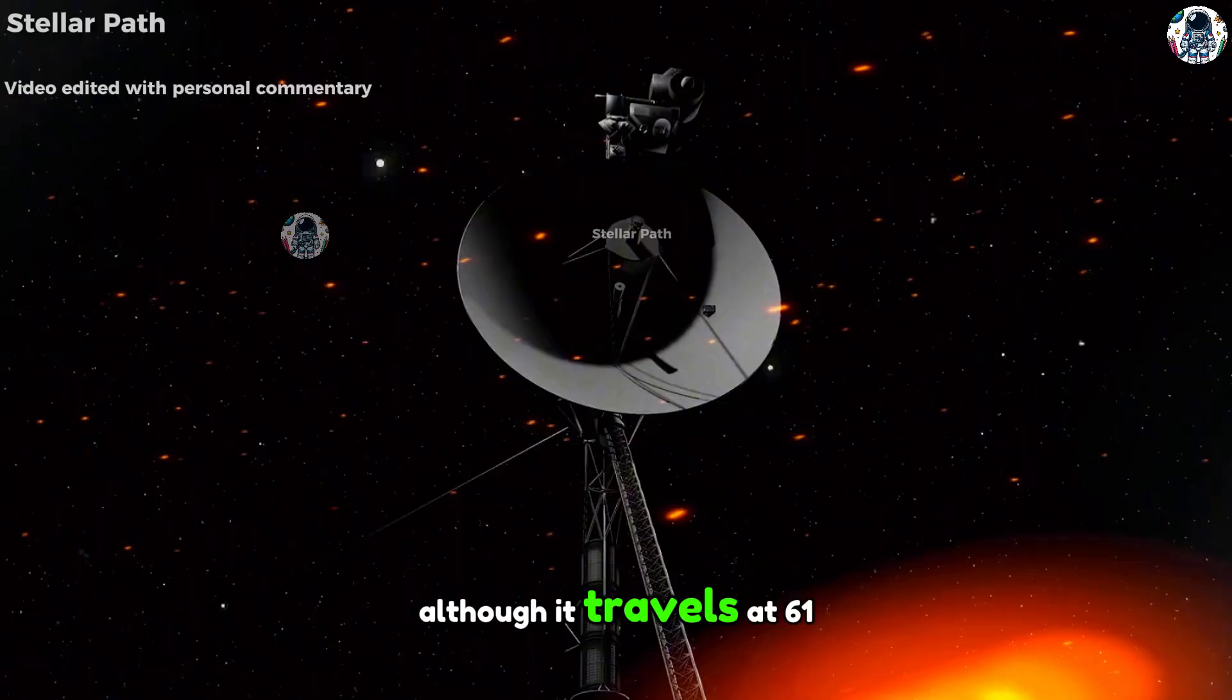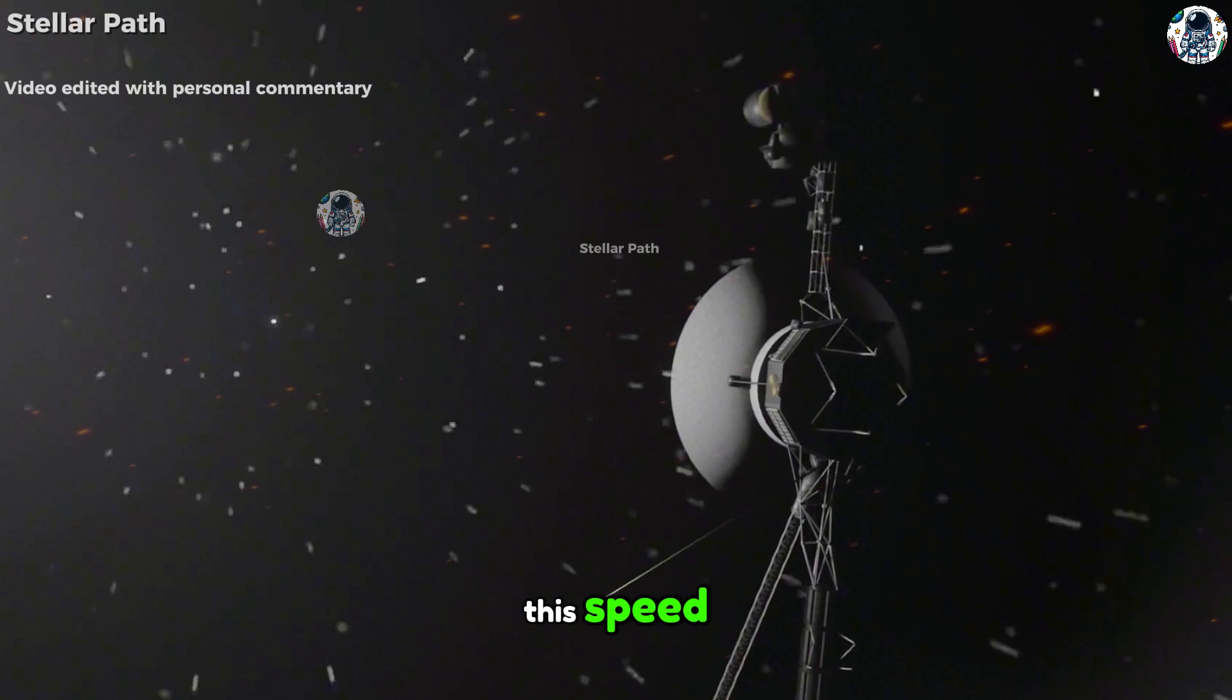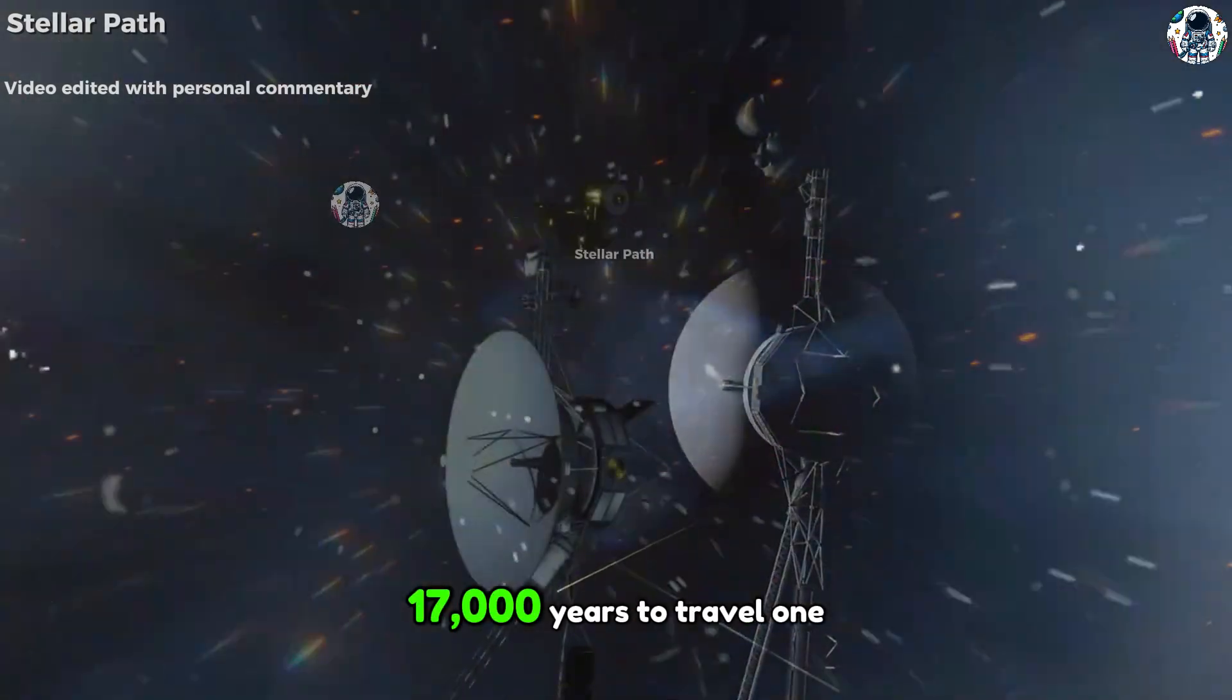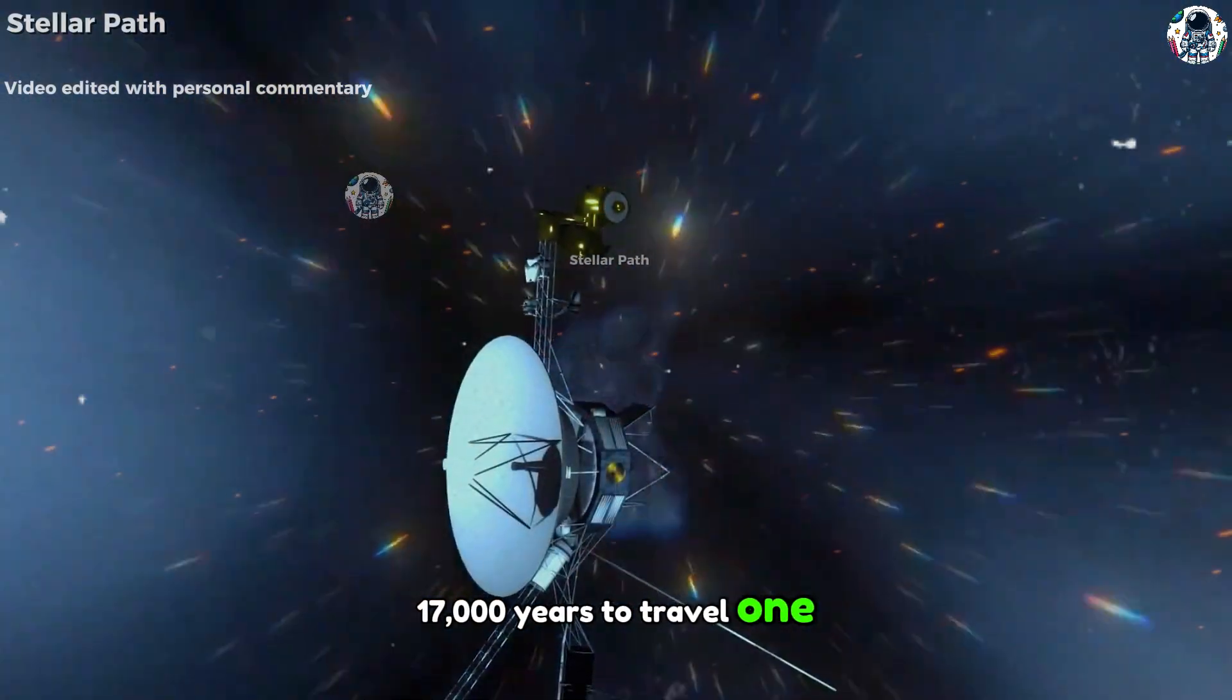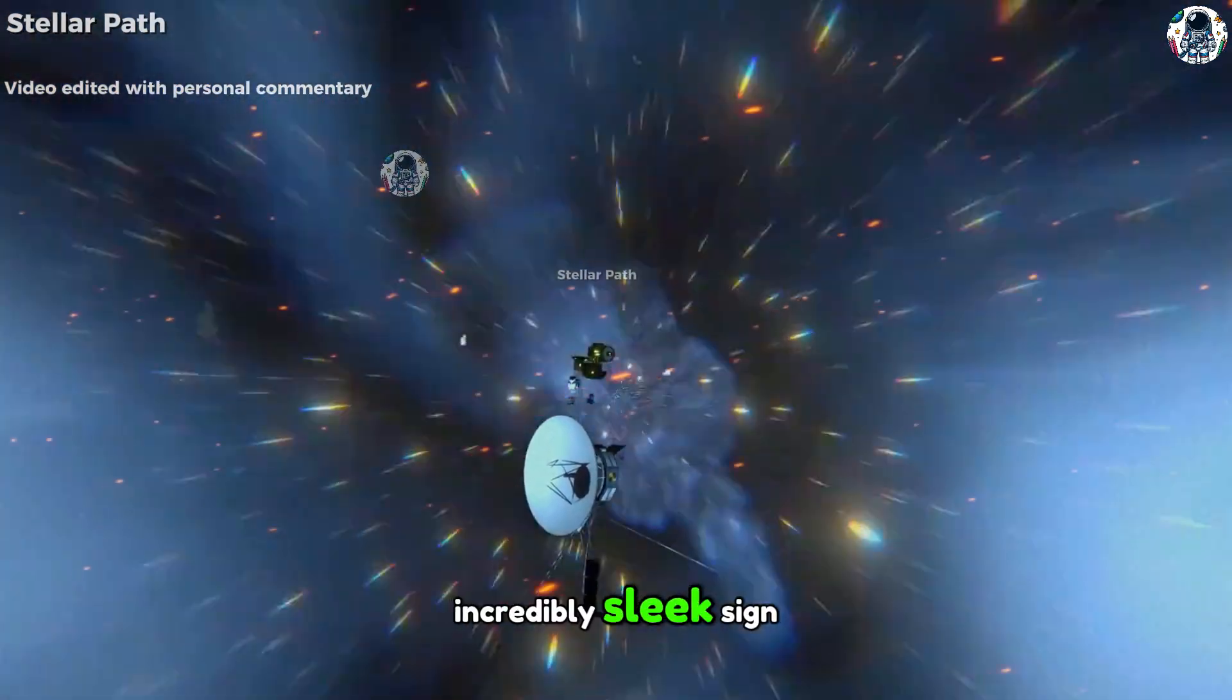Although it travels at 61,200 kilometers per hour, at this speed it would take a full 17,000 years to travel one light year. Can you imagine such an incredible timescale?